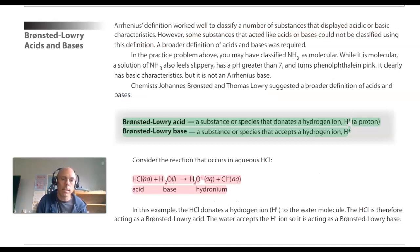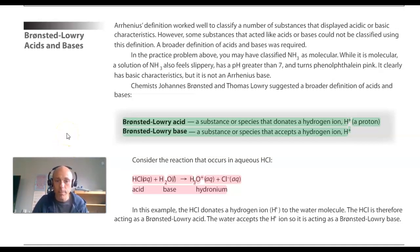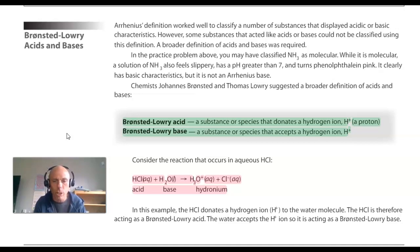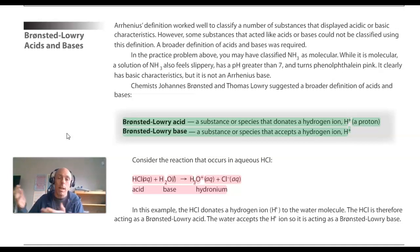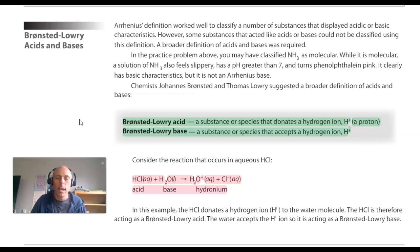In this class and on the AP exam we will be using the Bronsted-Lowry acid-base theory, which says that a substance is an acid if it donates a hydrogen ion — a proton — the same as the Arrhenius theory. But the definition for a base is different. The Bronsted-Lowry base is a substance or species that accepts a hydrogen ion, pulling a hydrogen ion out of solution to form a covalent bond with another ion, an anion. So a Bronsted-Lowry acid donates a hydrogen ion to solution, and a Bronsted-Lowry base accepts that hydrogen ion from solution, causing a bond to be formed.